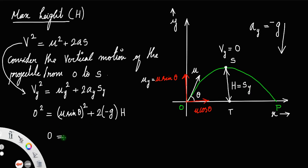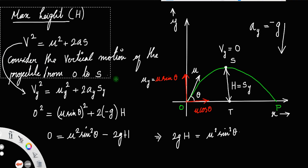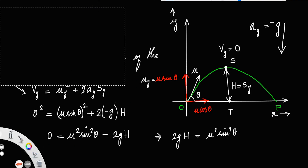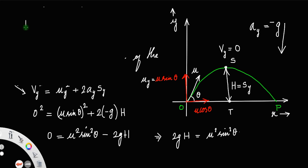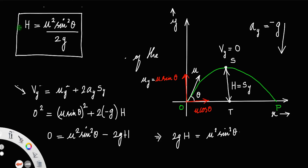On simplifying, we get 0 = u² sin²theta − 2gh, which gives 2gh = u² sin²theta. Therefore, the maximum height h = u² sin²theta / 2g. This is the expression for the maximum height attained by the projectile.